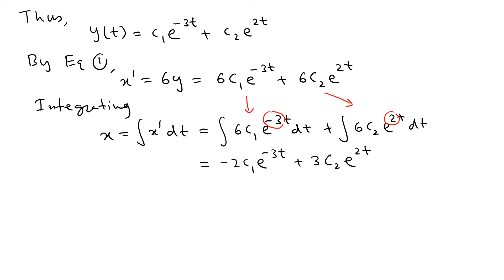The question is whether to add another integration constant. These are first-order equations, meaning each contributes one constant. We already have two constants C1 and C2, so we do not need an additional constant. No additional constants are needed because we already have C1 and C2 — two equations, two unknowns.